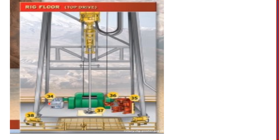Number 34 is the driller's cabin, where the driller controls all drilling operations. Number 35 is the iron roughneck. Number 37 is the slips. Number 38 is the air hoist.